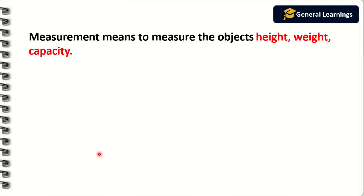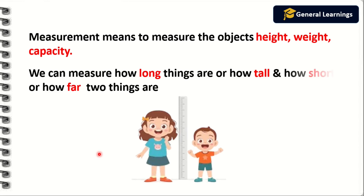In order to know the measure of any object, we must know the object's height, weight, and capacity. Using measurement, we can see how long an object will be, or how tall, how short, and how far two things will be. We can measure.